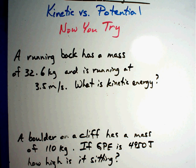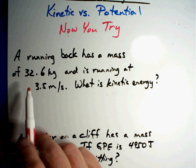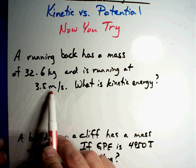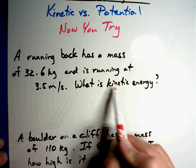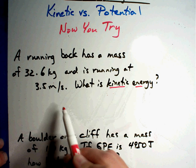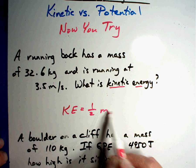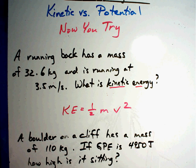Alright, let's see how you did. A running back has a mass of 32.6 kilograms and is running at 3.5 meters per second. What is the kinetic energy? There's my magic words. Kinetic energy equals one-half mass times velocity squared.